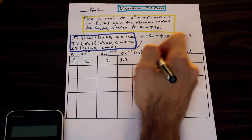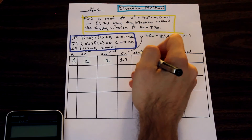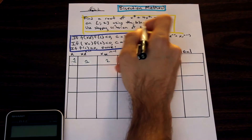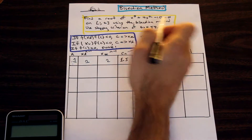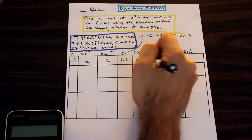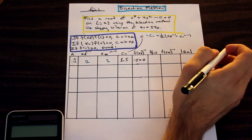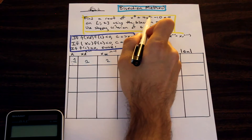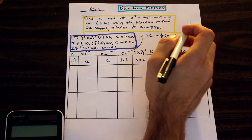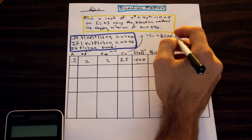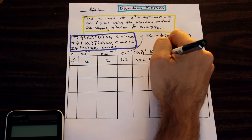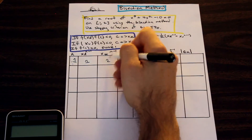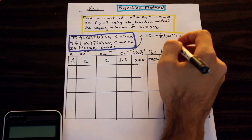Now we have the function, so let's plug our XL value, XL n minus 1, into the function and see what we get. We get 1 plus 4 minus 10, that's negative 5. Then let's plug in our Cn value: 1.5 cubed plus 4 times 1.5 squared minus 10. That gives us a value of 2.37570. And if we plug 2 into the function, we get 14.